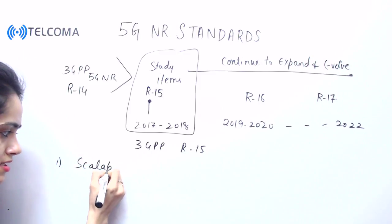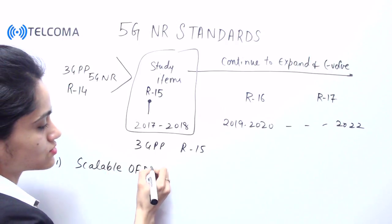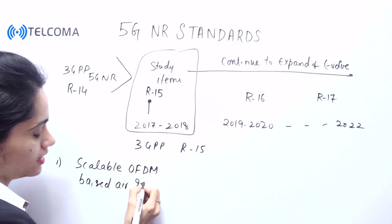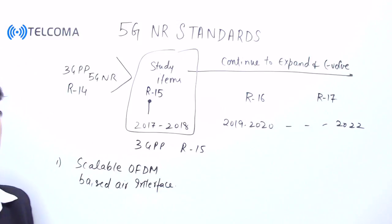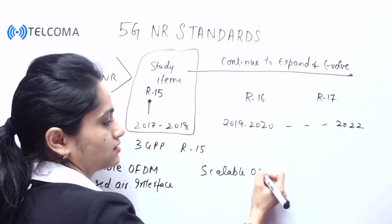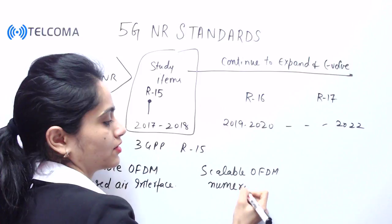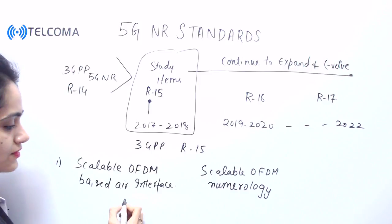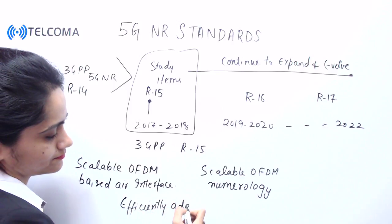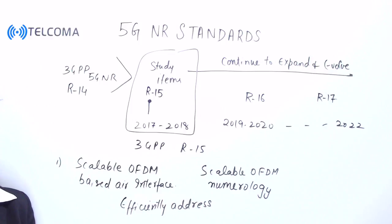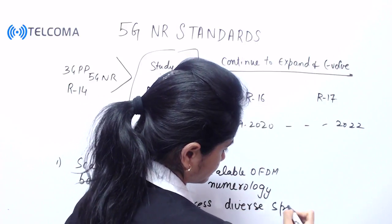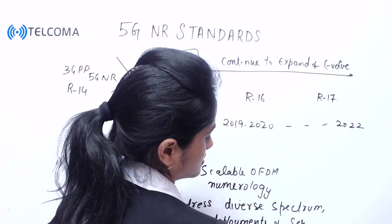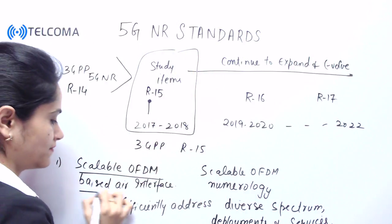The first key parameter is scalable OFDM — Orthogonal Frequency Division Multiplexing — as the air interface. We require scalable OFDM numerology for this interface so that we can efficiently address diverse spectrum deployments and services.